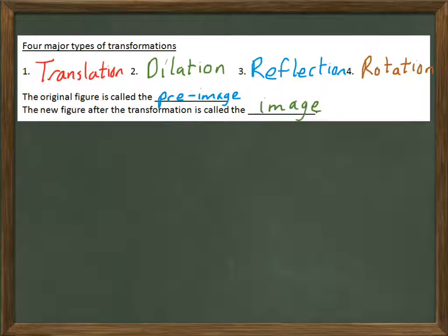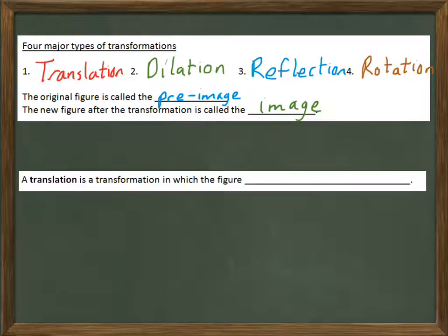So now let's look specifically at translations. A translation is a transformation in which the figure slides to a new location. We haven't changed anything else about the figure. It's just slid to a new location.